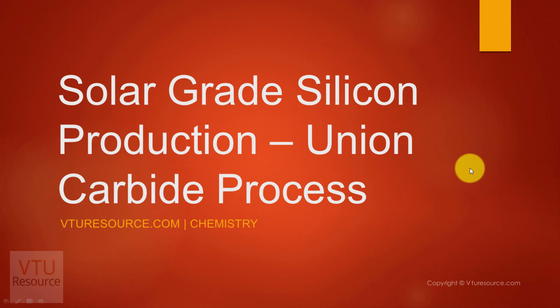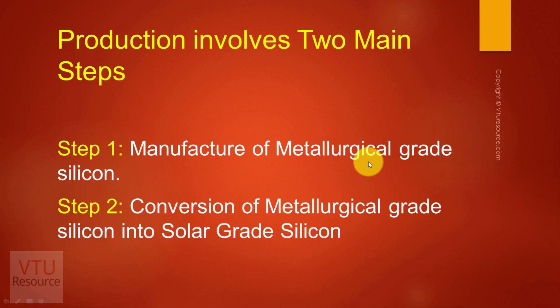Let us discuss the synthesis of solar grade silicon. Solar grade silicon is synthesized by the Union Carbide process. We have two types of silicon: one is metallurgical grade silicon, and the other is semiconductor grade silicon. We cannot use either metallurgical grade silicon or semiconductor grade silicon for synthesis of PV cells or solar cells.